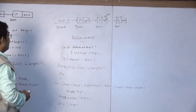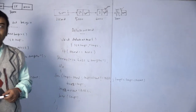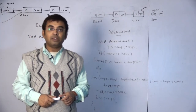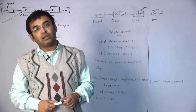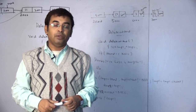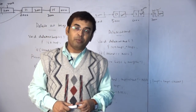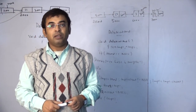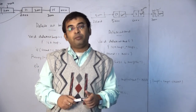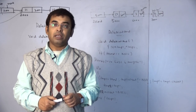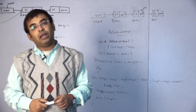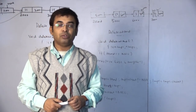Today we discussed insertion and deletion operations on a linked list: insert at begin, insert at end, delete at begin, and delete at end. Using these operations you can also implement stack and queue. For a stack, use insert at begin and delete at begin (or insert at end and delete at end) with head as the top. For a queue, use insert at end and delete at begin, with tail as rear and head as front.